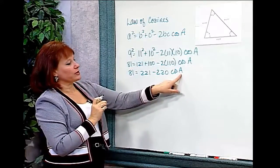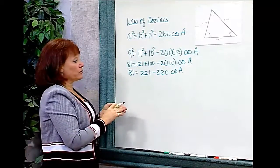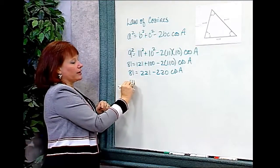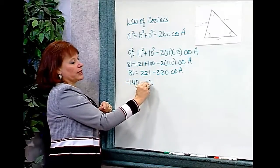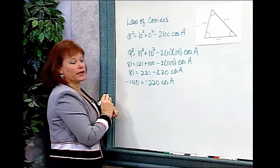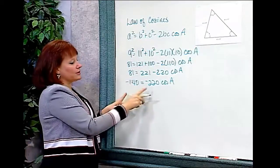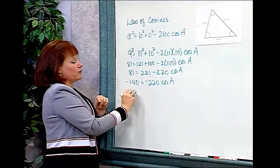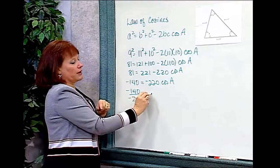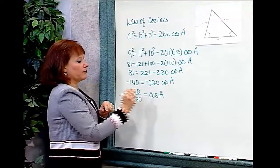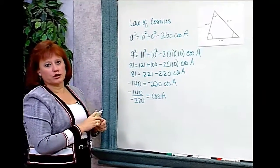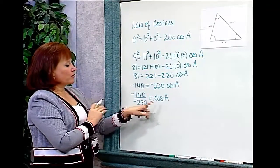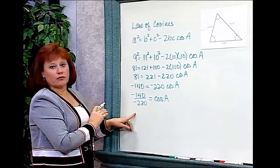Since cosine A is the variable I'm solving for, I want to get rid of things that are added to it first, so I'm going to subtract 221 from both sides of the equation. And I'll have negative 140 is equal to negative 220 cosine of angle A. Now I need to divide both sides by negative 220, so I'll have negative 140 over negative 220 is equal to cosine A.